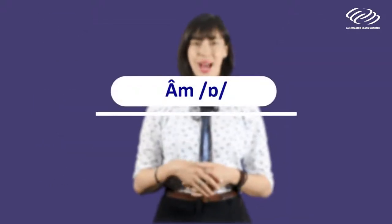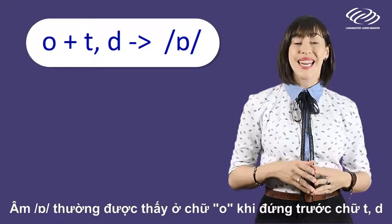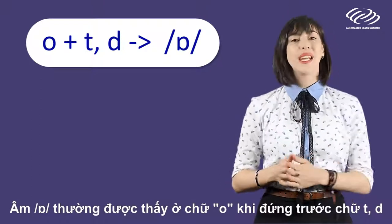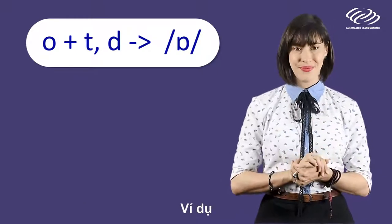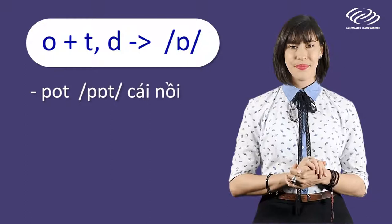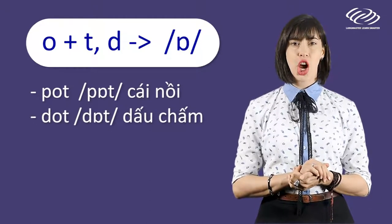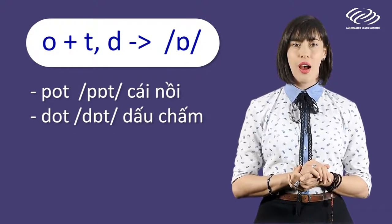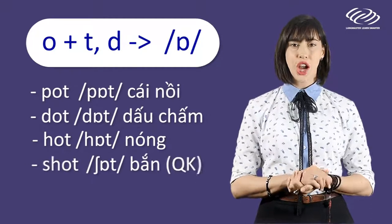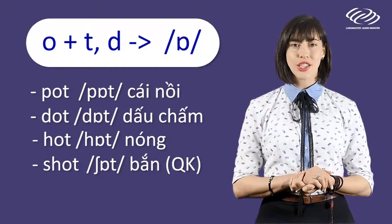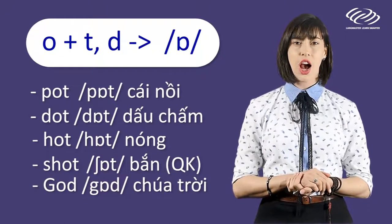The AH sound. The AH sound is often seen in the letter O when it comes before letters T or D. For example: hot, dot, shot, got.